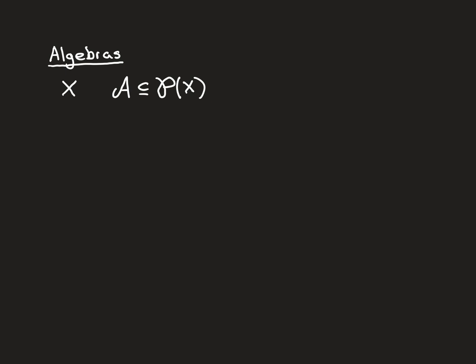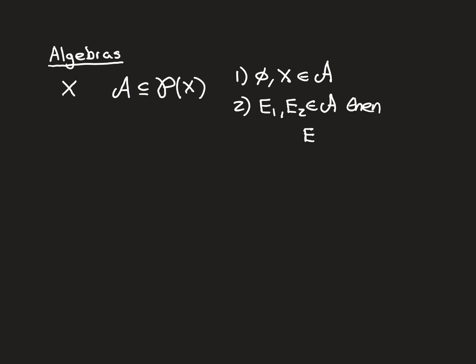Let's remind ourselves of the properties that a subset of the power set has to obey in order to be called an algebra. Property one: the empty set and the entire set have to be elements of the algebra. Property two: it has to be closed under finite intersection. So if e1 and e2 are elements of A, then e1 intersect e2 also has to give another subset of x that is in your algebra. Remember, the moment you have this, it implies that all finite intersections are inside your algebra, because you just apply induction using this.